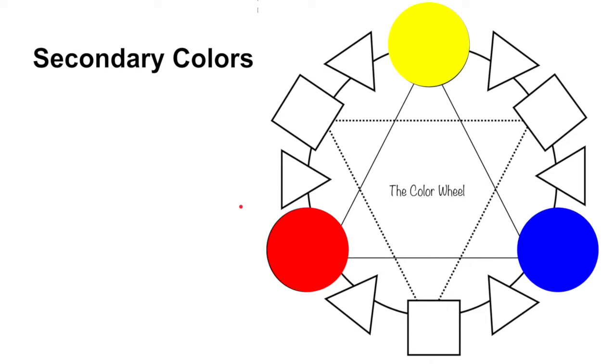Now secondary colors would be orange, green, and violet. And we say violet and not purple, because in color theory, violet is the correct term when we're talking about the spectrum of color. So it's ROYGBIV, not ROYGBIP.